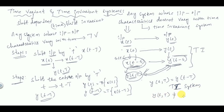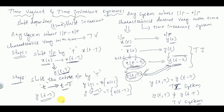If y(t, T) is not equal to y(t-T), then it is called a time variant system. To summarize the procedure: in step one, replace x(t) with x(t-T) and label the output y(t, T). In step two, replace t with t-T throughout the original output and label it y(t-T). If both outputs are equal, it is time invariant; if not, it is time variant.